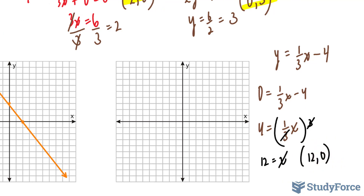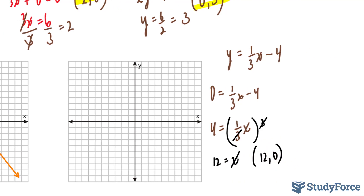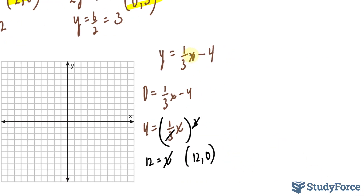Now I will set x equal to 0. If I set this x equal to 0, I'll end up with y equals one-third times 0, which is 0, so y equals negative 4. Our point is at (0, -4).